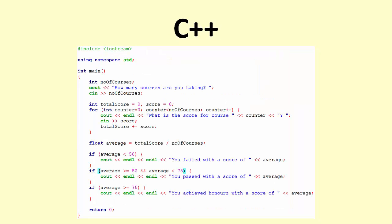And this is true if we go to C++, for example. We start off by asking how many courses you're taking. We then set total score to zero. We go round a loop asking what the score was for a particular course. We add that score to the total score. We find the average. And then depending on the average we display either you failed with a score of or you passed with a score of or you achieved honors with a score of. The logic, and stop me if this is getting boring, but the logic is exactly the same.